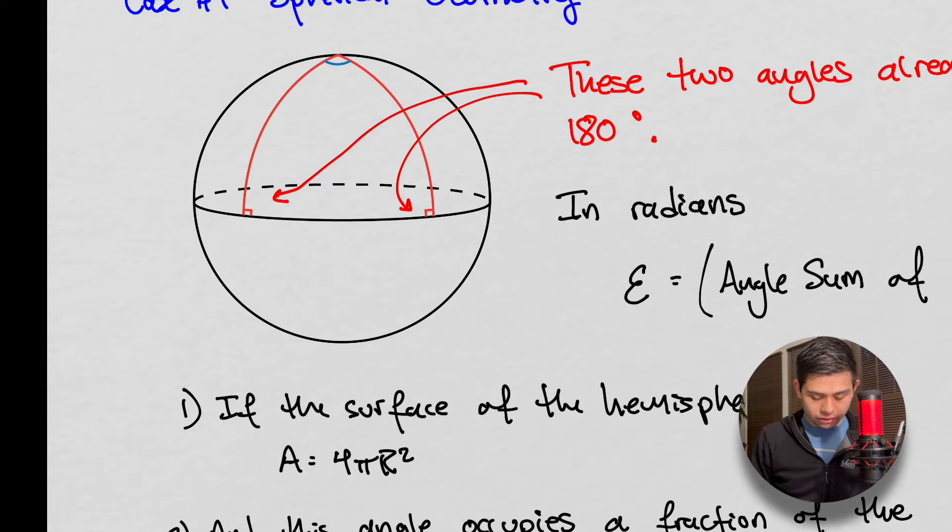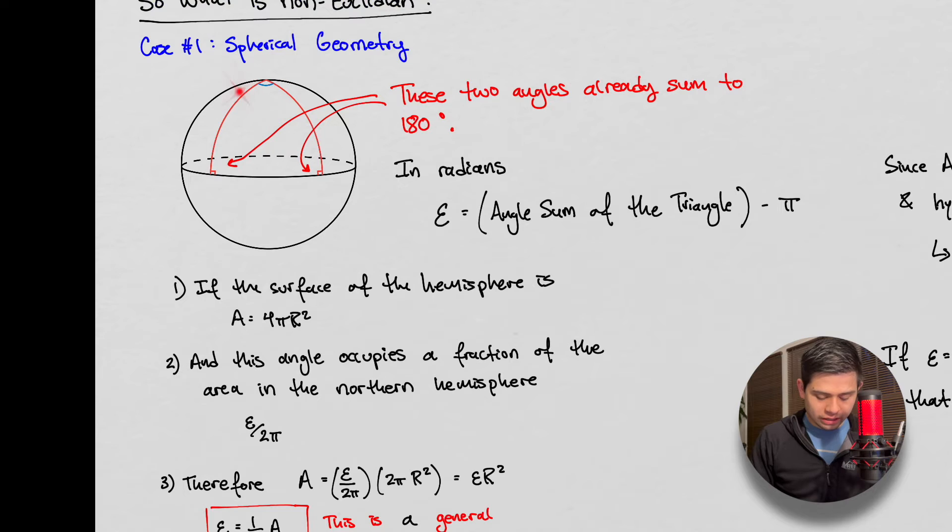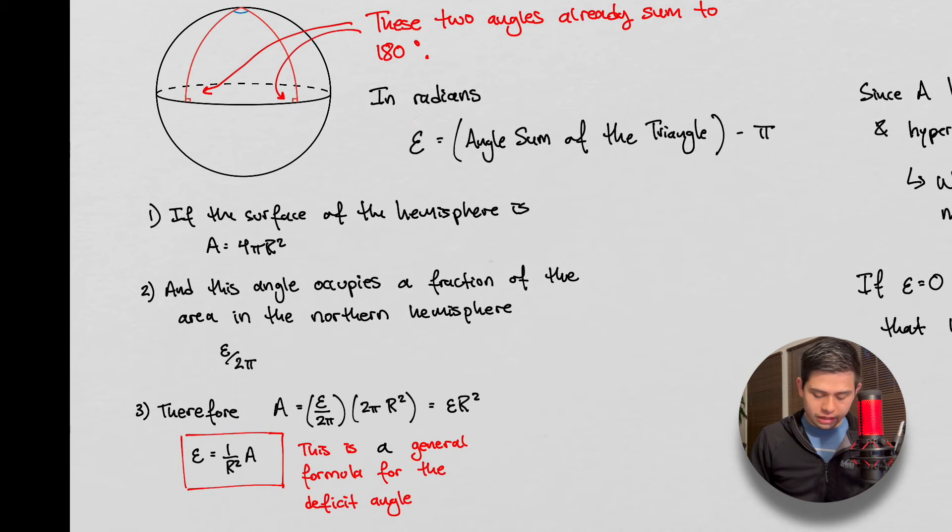And we can already see, if these already add up to 180, then we're going to have some deficit angle, or some angle that deviates from flat space. So this is the degree of the internal angles within a triangle that tells us how much we're deviating from flat space. So in spherical space or spherical geometry, the deficit angle,